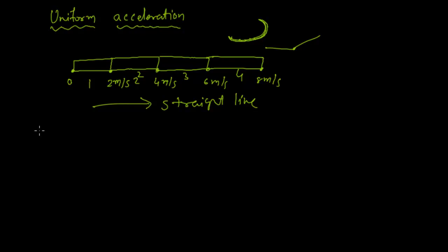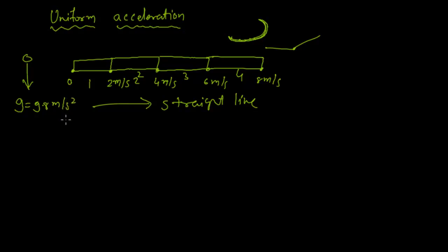A classic example of uniform acceleration is a freely falling body, which undergoes acceleration g = 9.8 meter per second squared at each second. This is the great example of uniform acceleration.